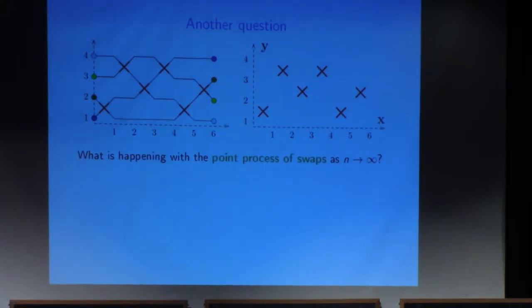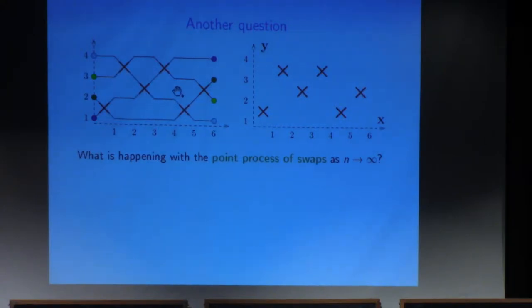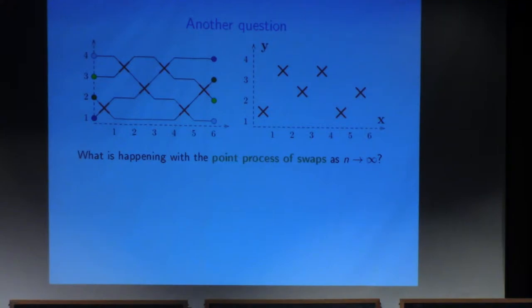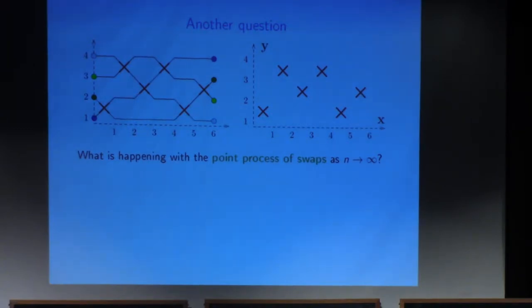The third point of view, where we have some progress and can actually prove things: instead of looking at wires or permutations, let's look at swaps — the crosses where two adjacent labels are swapped. Look at them just as unit masses, forming a two-dimensional point process of swaps. The analogy with random matrices is that eigenvalues form a point process and we want to understand how it looks; here we have swaps instead of eigenvalues, and we want to understand this point process.